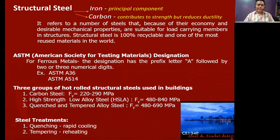Now, we have what we call ASTM designations here. ASTM stands for American Society for Testing Materials. This is the American group that monitors all structural materials. They're the ones who give designations or names to the steel. According to ASTM, for ferrous metals, there's a designation prefix letter A. A stands for aurum, followed by two or three numerical digits.